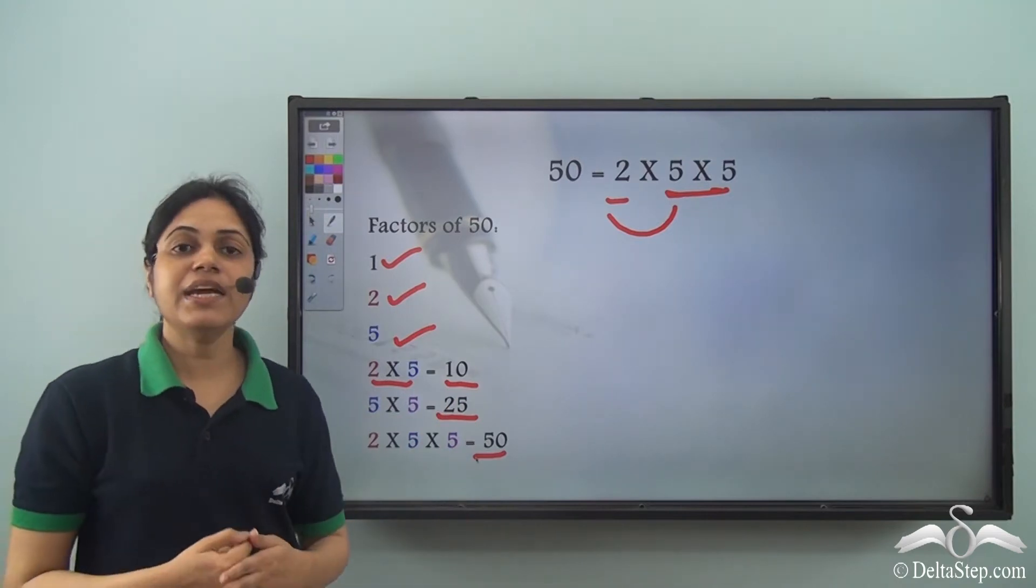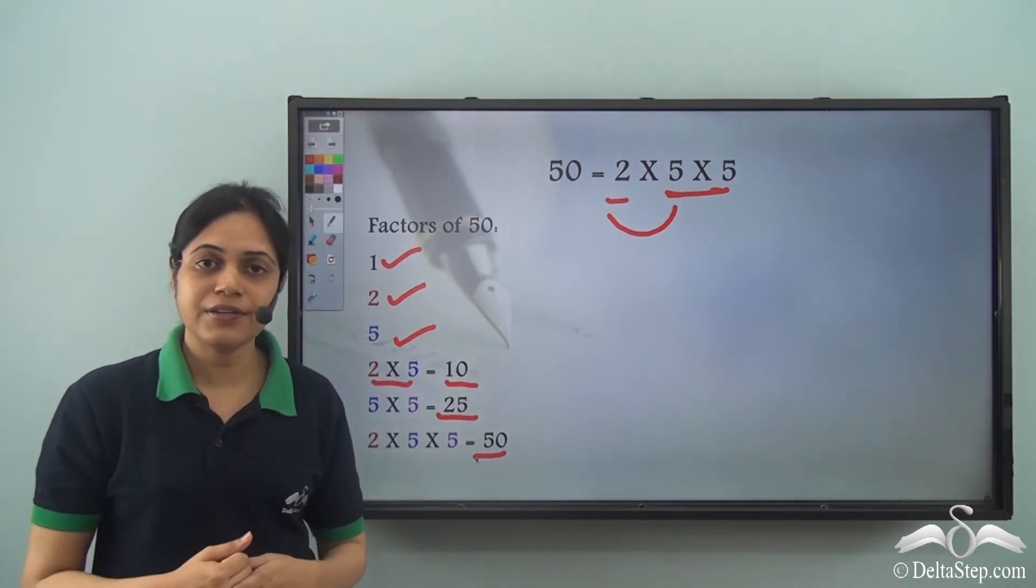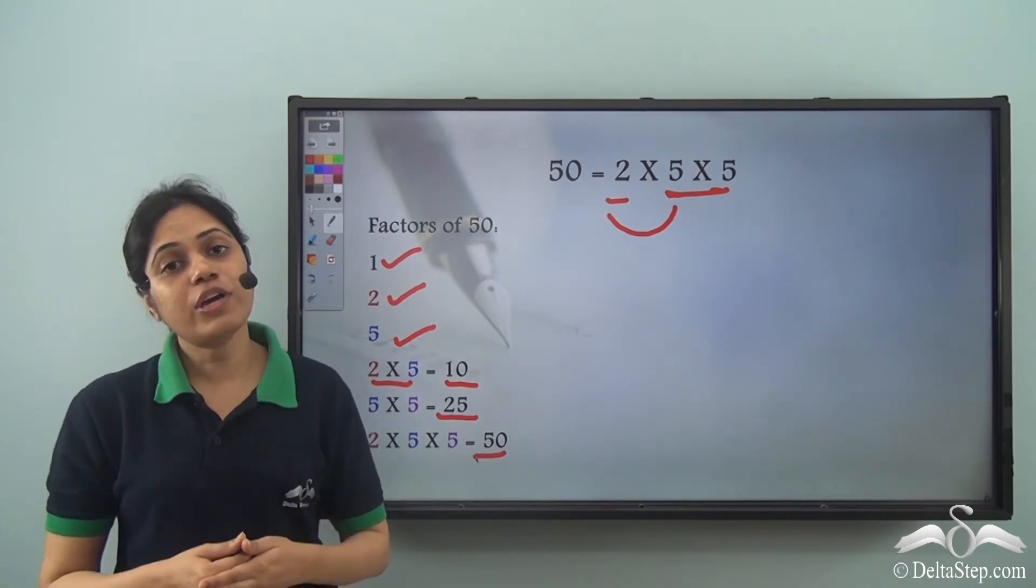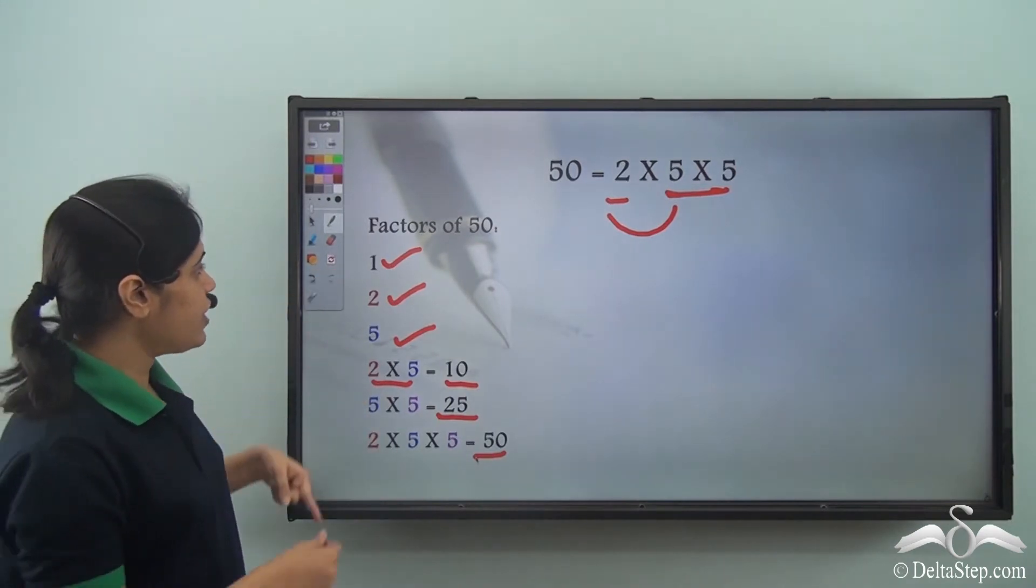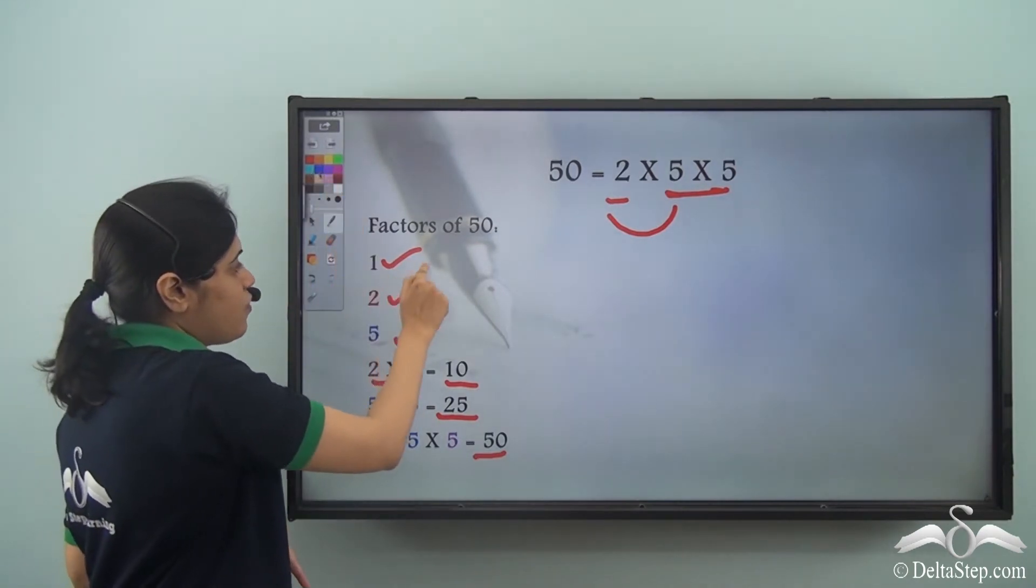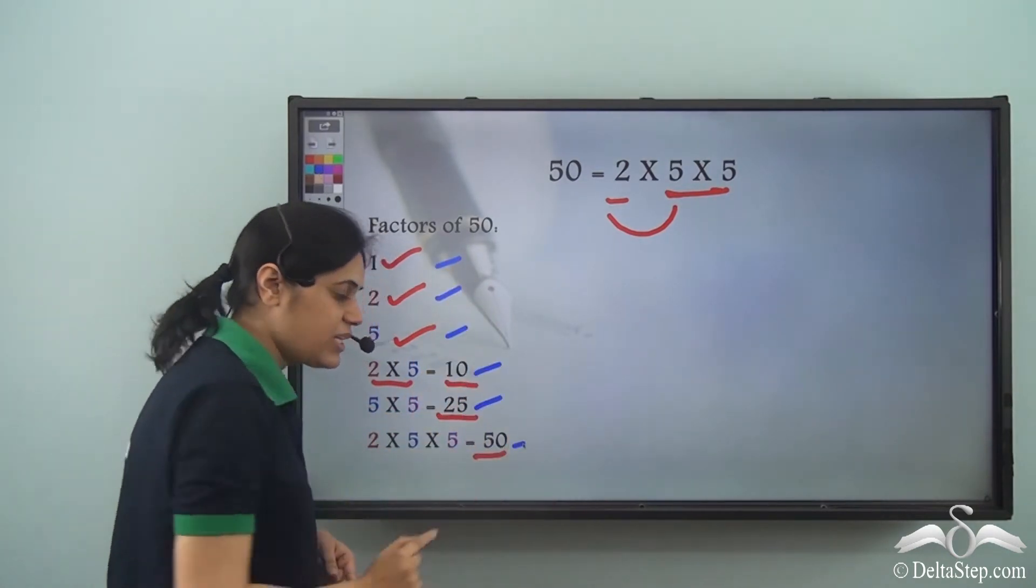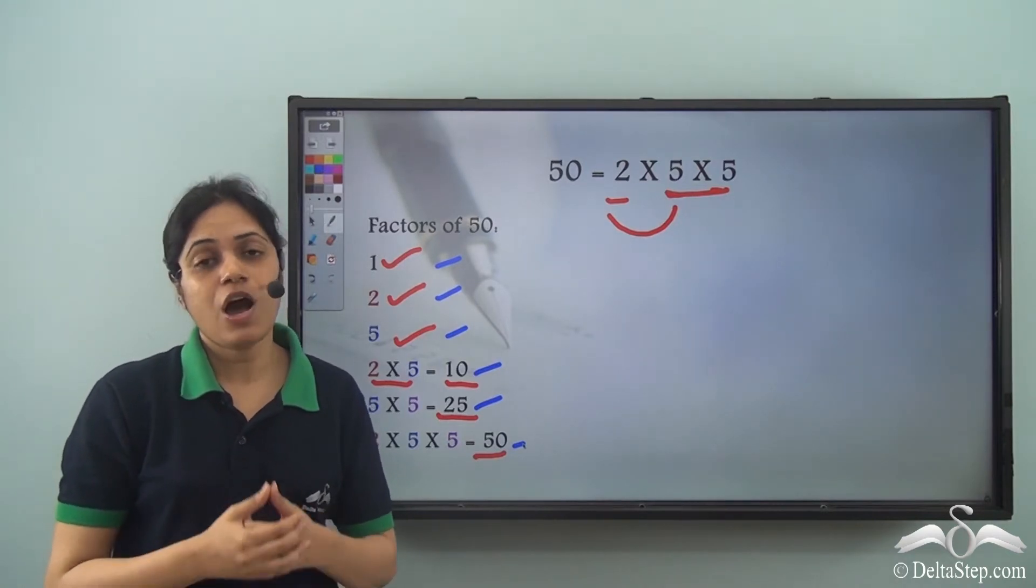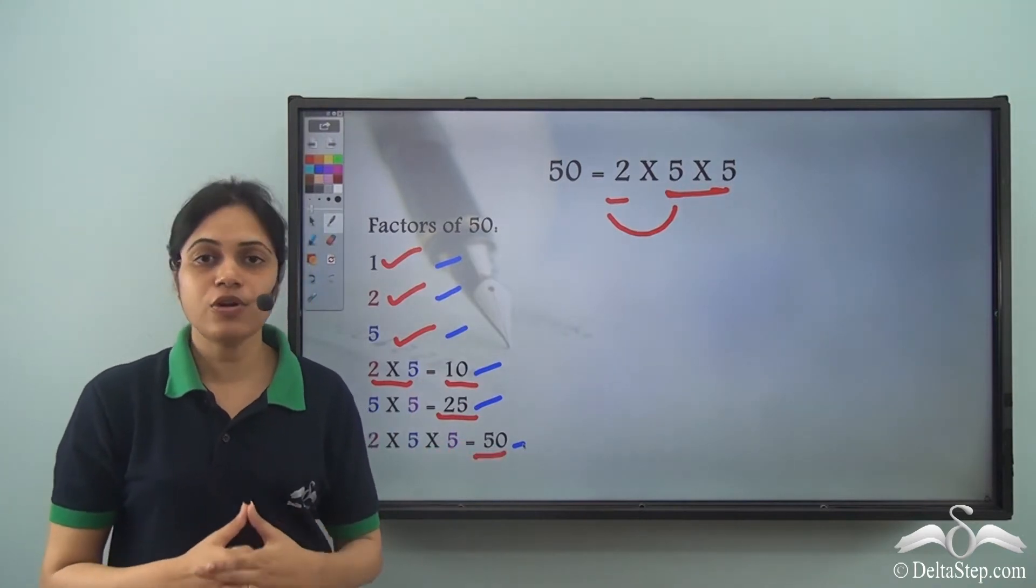This is how I can get all the factors of any number using the prime factors. But after you do this, how can you be sure whether you have got all the factors? So over here we have 1, 2, 5, 10, 25, 50 - six factors of 50. But suppose there were more factors. How do you know whether you have actually listed down all the factors or not?